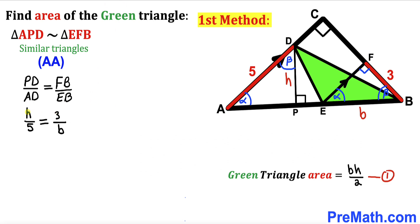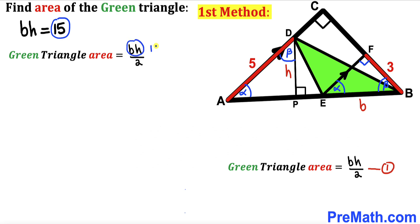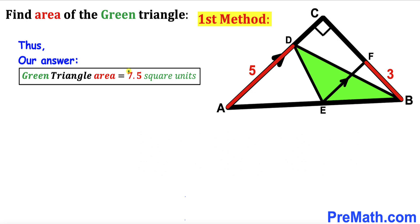Cross-multiplying gives us b times h equals 15. Substituting into equation 1: area equals 15 divided by 2, which equals 7.5. Thus the area of the green shaded triangle is 7.5 square units using this first method.